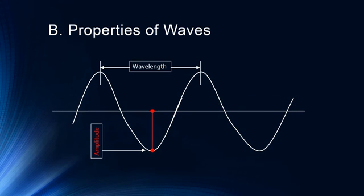Let's review the properties of waves — we'll be talking about waves in terms of both light and sound. Light travels at 186,000 meters per second. We refer to wavelength as the distance between peaks or troughs, meaning one full repetition of the wave. We also talk about amplitude, which is the height of the wave. For light, wavelength is associated with our perception of color or hue, and amplitude is associated with our perception of brightness.